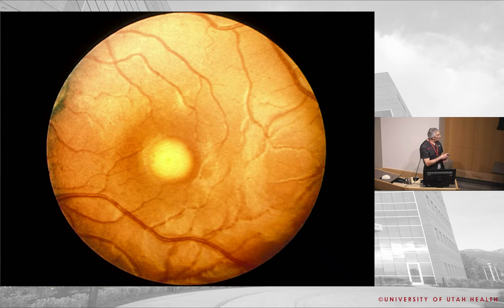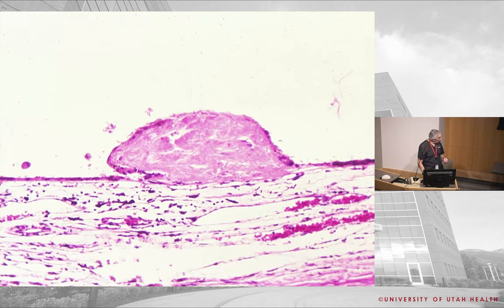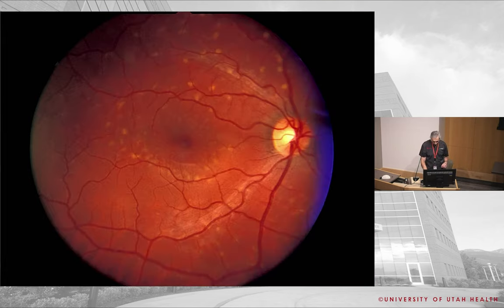This image shows what looks like an egg yolk beneath the retina in the center — that's a vitelliform dystrophy. Best's dystrophy is a type of vitelliform dystrophy that looks like this. The vitelliform material is underneath the RPE, and this is what vitelliform maculopathy looks like.